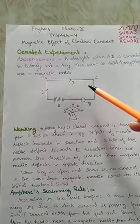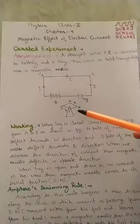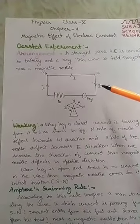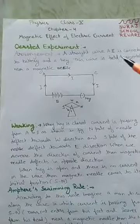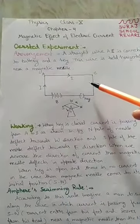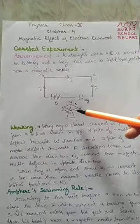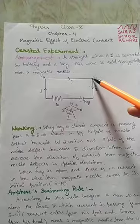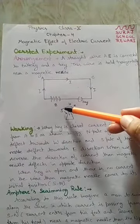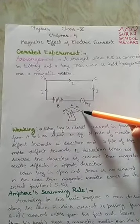If we reverse the direction of current through the conductor, in that case the deflection of the magnetic needle also reverses. When the current flows from C to A, the south pole of the magnetic needle deflects towards the west direction and the north pole deflects towards the east direction.